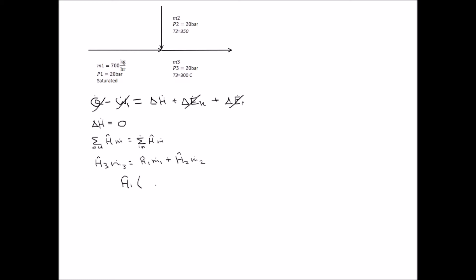From the saturated steam tables, we get the enthalpy of stream one, which is saturated steam at 20 bar, to be 2,797.2 kilojoules per kilogram. The enthalpy of stream two, which is superheated steam at 20 bar and 350 degrees C, is 3,139 kilojoules per kilogram. And the enthalpy of stream three, which is also superheated at 20 bar and 300 degrees C, is 3,025 kilojoules per kilogram.